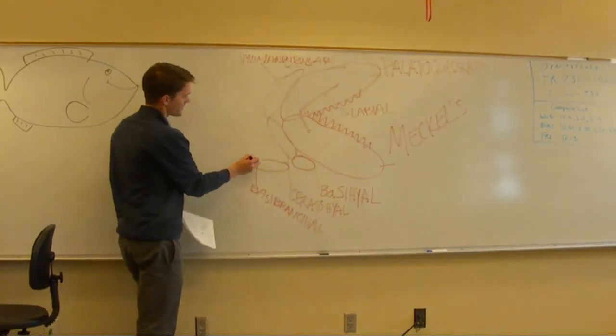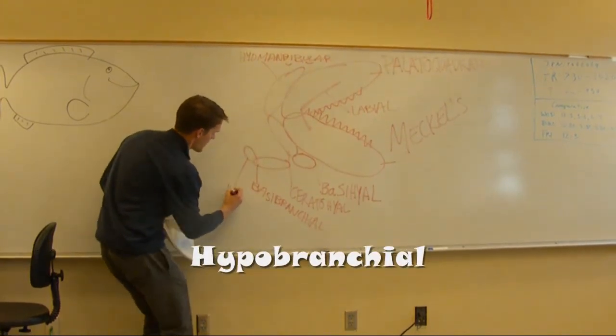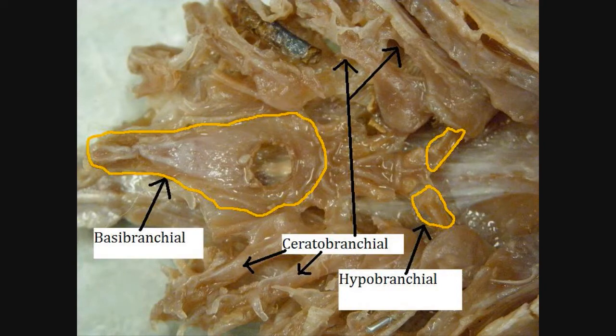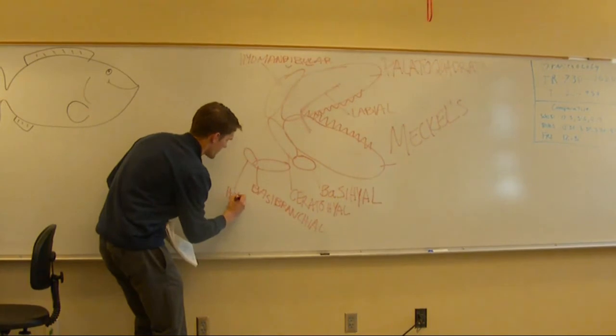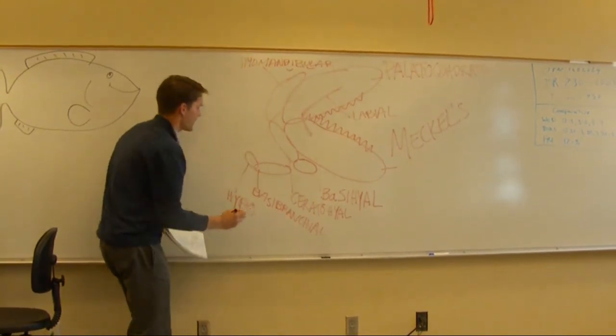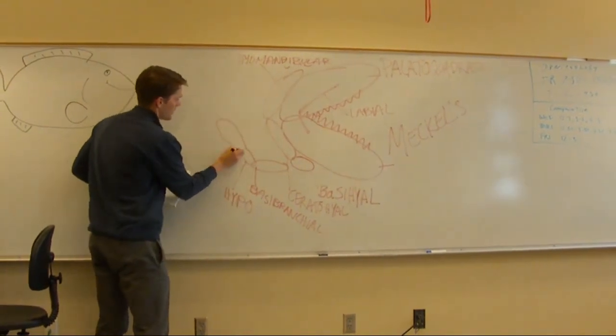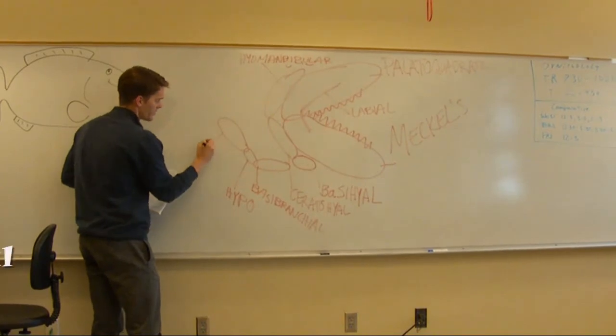And then coming right off of that, it's just a little bone. It's a hypobranchial. And then parallel with the cerato-hyo, there's the cerato-branchial.